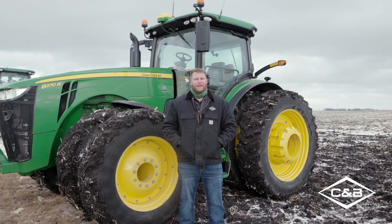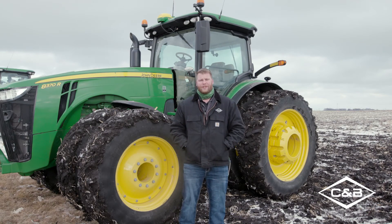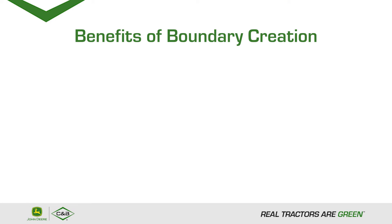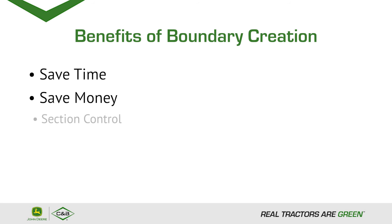Now we are done with the field. What are the big advantages of boundary creation? Some of the big ones would be saving time, getting into your fields, and getting the work done in a timely fashion. How does boundary creation save you money? Well, with the boundaries created, you can now come back and use section control for your planter. During section control, you can save yourself money on inputs such as fertilizer and seed. Thanks for joining us for Tech Days 2021 here in Jackson, Minnesota. I'm Joe Blafus, Precision Ag Consultant for C&B Operations.